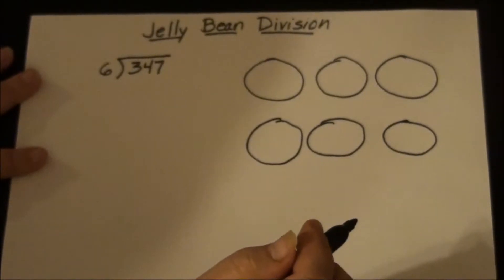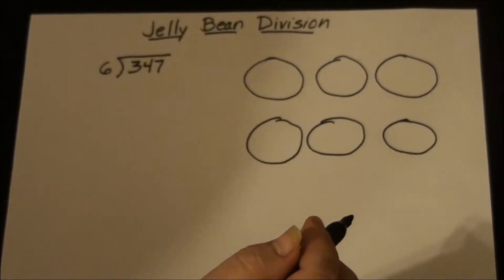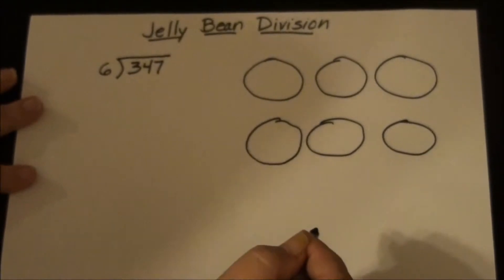So since children can do the multiples of 2, 5, 10, 20, 50, and 100 quite easily, this ends up being a really easy way to do long division for them.